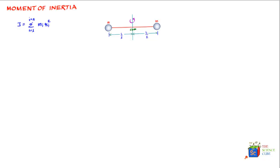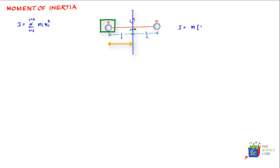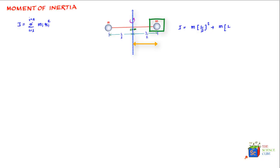Here we have two masses; the axis of rotation passes through the center of mass, and the distance of each mass from the axis is l/2. So the moment of inertia is: I = m(l/2)² + m(l/2)², which gives I = ½ml².